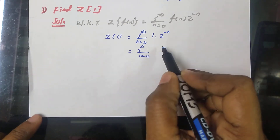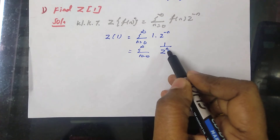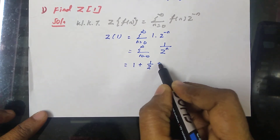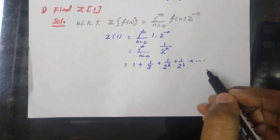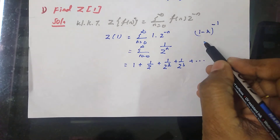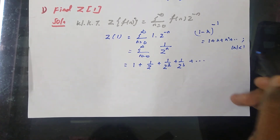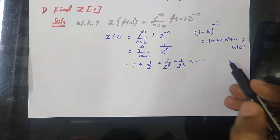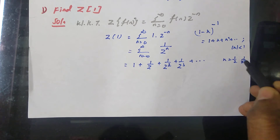We can write z to the power minus n as 1 by z to the power n. Applying values for n: when n equals 0, we get 1; when n equals 1, we get 1 by Z; when n equals 2, we get 1 by Z squared; plus 1 by Z cubed, and so on to infinity. We use the well-known formula: 1 minus x to the power minus 1 equals 1 plus x plus x squared plus etc., provided mod x is less than 1. Comparing, x equals 1 by Z, so the condition becomes mod of 1 by Z less than 1.